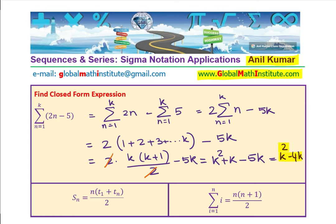So the closed form is k squared minus 4k, you see that? So that is how we will actually find the closed form. I hope the concept is absolutely clear. Feel free to write your comments and suggestions.